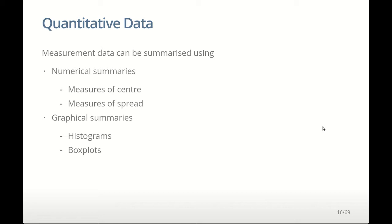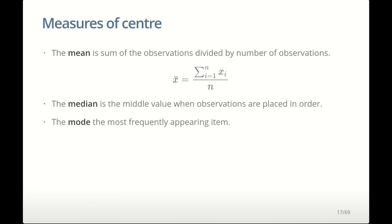We're going to start by looking at quantitative data — that's numeric measures. There are a couple of numeric summaries and a couple of graphical summaries we'll look at, including density plots as well as histograms and box plots. The numeric summaries will be measures of center and spread. Measures of center tell us where the typical values are, and measures of spread measure the range or how observations are scattered around that measure of center.